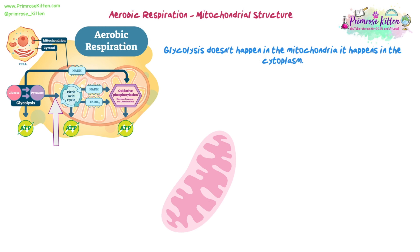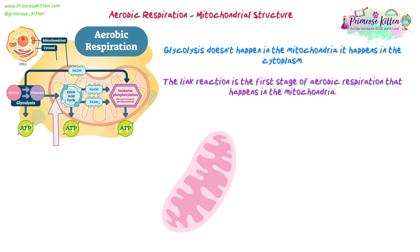We're going to have a look at aerobic respiration properly now. We've done glycolysis, and that obviously doesn't happen in mitochondria — it happens in the cytoplasm. Now we're going to look at the link reaction, which is the first stage of respiration to happen inside the mitochondria. Looking at this diagram, the link reaction is happening here — just inside the mitochondria, in the matrix.